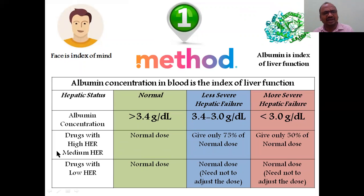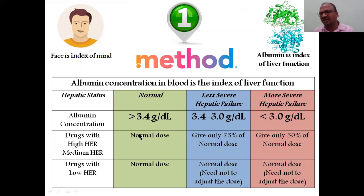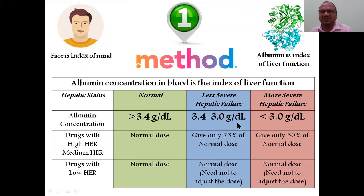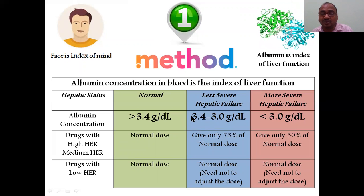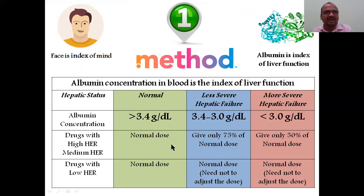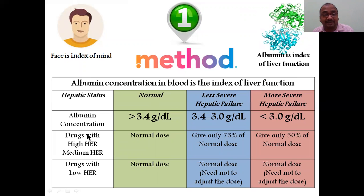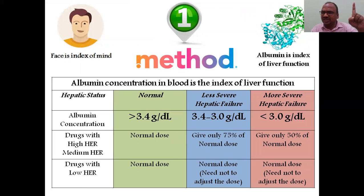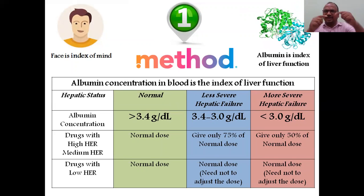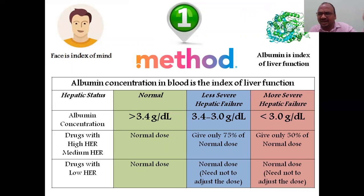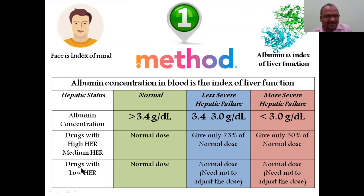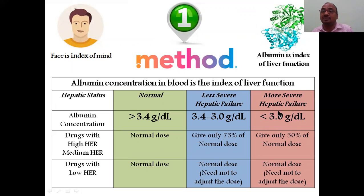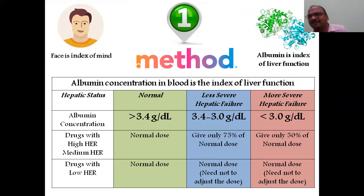For normal albumin (>3.4 g/dL), give the normal dose regardless of extraction ratio. For less severe hepatic failure with albumin between 3.0 and 3.4 g/dL, if the drug is high or moderately hepatic extraction ratio, give only 75% of the normal dose. For example, if normal dose is 100 mg, give 75 mg. If the drug has a low hepatic extraction ratio, normal dose is given — no adjustment needed.